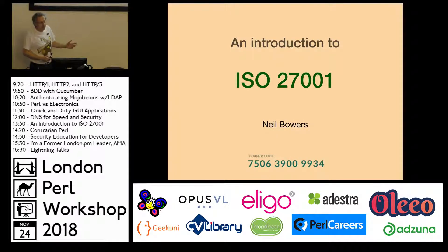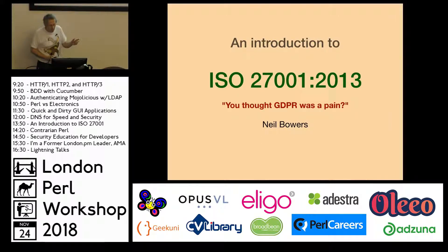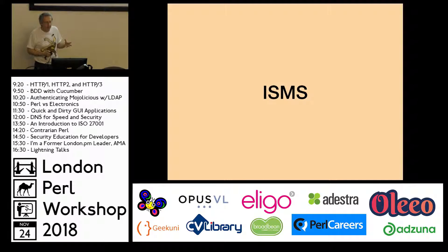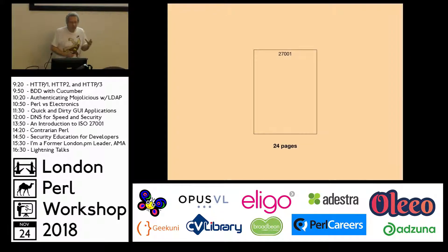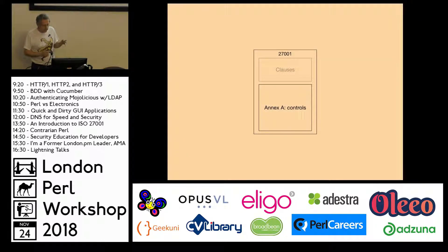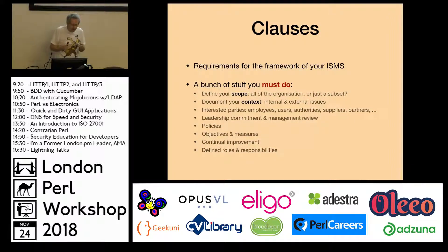ISO 27001 is an international standard — all standards have a year against them. It's in the area of information security and it's about defining an Information Security Management System, which is called an ISMS. The standard is 24 pages, split into two sections: the first section is clauses, the second section is controls. Clauses are basically the bit that everyone needs to do — this defines the framework that you run your ISMS in.